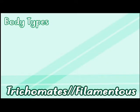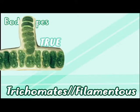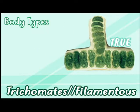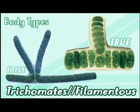Trichomes, or filamentous forms, may observe true and false branching filaments and can be uniseriate or multiseriate, in which some can be enclosed in a gelatinous sheath.